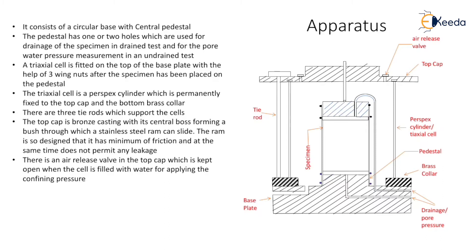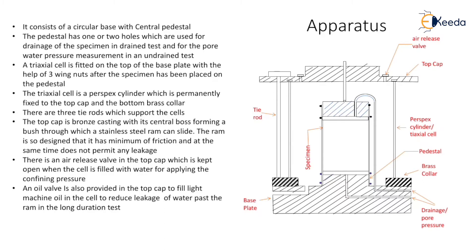An oil valve is also provided in the top cap to fill light machine oil in the cell to reduce leakage of water past the ram in long duration tests. On the top left hand side we can see the oil valve. The apparatus is mounted on a loading frame. There is a loading cap on the top of the soil specimen on which pressure is applied by the ram and this pressure is transferred to the soil specimen.